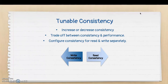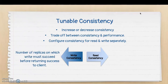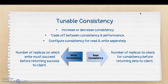First of all, let's understand what write consistency and read consistency mean. Write consistency means the number of replicas on which the write operation must complete before returning success back to the client. Read consistency means the number of replicas to check for consistency before returning the data requested by the client.